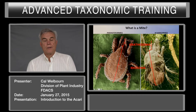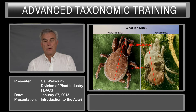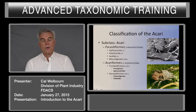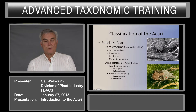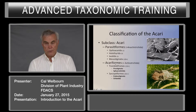What is a mite? A mite is an arachnid that consists of two body parts, anathosoma and idiosoma, and they're divided into two major groups, the parasitiformes and the acariformes. Here's a classification of the acari. There are two major groups, the parasitiformes and the acariformes.